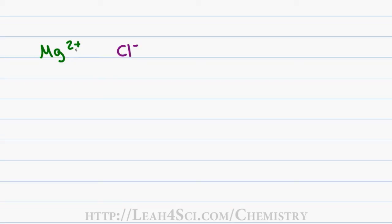This means I take the positive two from magnesium and bring it down to the chlorine giving me two chlorides and the invisible one from chlorine down to the magnesium giving me one Mg.